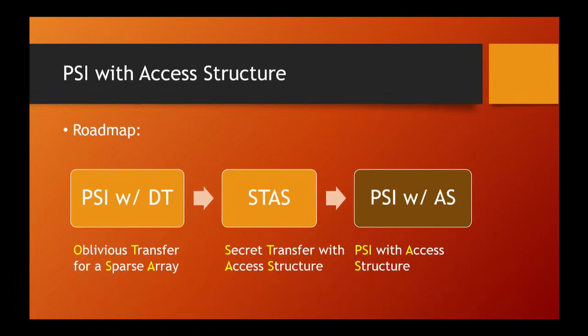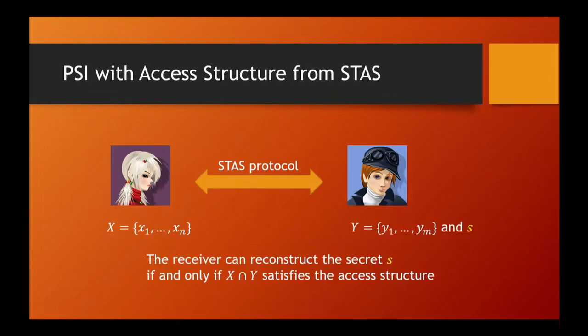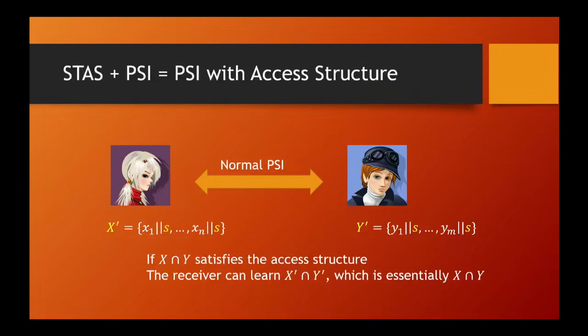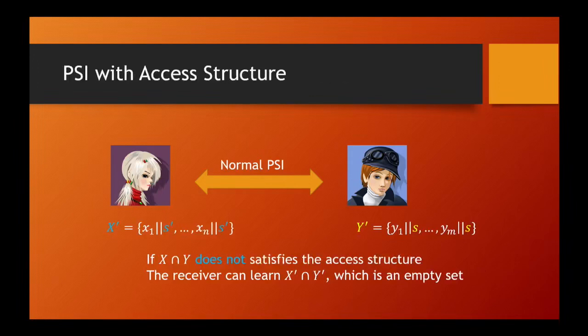With STAS, PSI with access structure is readily achievable. The sender randomly selects a secret S and then engages in a STAS with the receiver. At the end, the receiver can reconstruct the secret if and only if the intersection satisfies some access structure. The secret S serves as an access token, deciding whether the receiver can get the intersection or not. In more detail, the sender and receiver can now engage in a normal PSI over the set of elements, but every element is now appended with the secret value S. At the end, if the receiver obtained the access token S in the previous step, she can learn the intersection of X prime and Y prime, which is essentially the intersection of X and Y. On the other hand, if the receiver does not have the access token, the intersection will be an empty set.